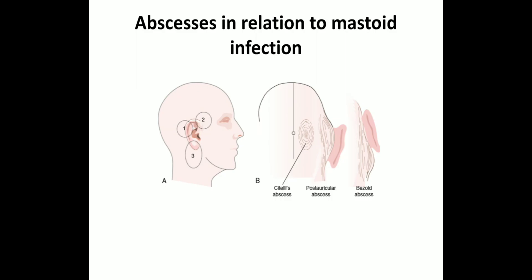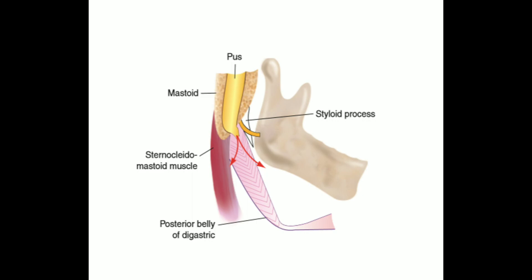There are numerous named abscesses described in relation to mastoiditis: post-auricular abscess, zygomatic abscess (infection of the zygomatic air cells at the posterior root of the zygoma), and Bezold's abscess, which is very important for examinations though rare nowadays. The empyema of the mastoid — where the whole mastoid air cells are converted into a single cavity filled with pus — if that pus breaks through the medial side of the tip of the mastoid and presents as a swelling in the upper part of the neck, it is called Bezold's abscess. If you see a neck swelling in a patient with ear discharge, do not jump to the conclusion that the patient has Bezold's abscess — the most common cause of neck swelling is lymph nodes.